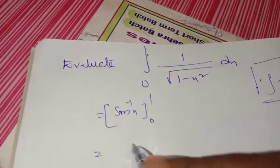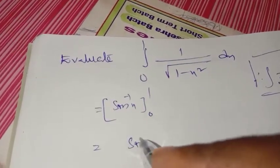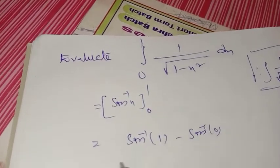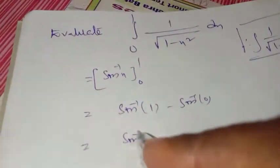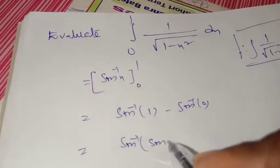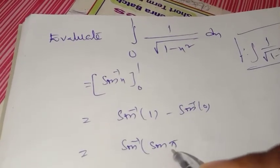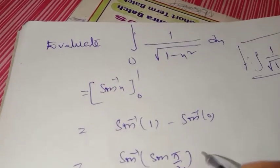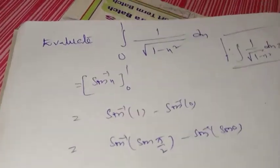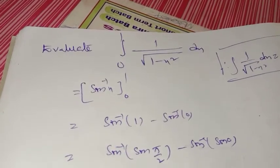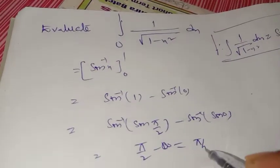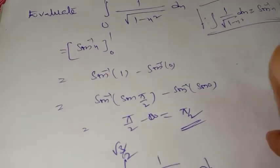That equals sin inverse x with limits 0 to 1. Substituting: sin inverse of 1 minus sin inverse of 0. sin inverse of 1 is 90 degrees, that is π/2. sin inverse of 0 is 0. So the answer is π/2 minus 0 equal to π/2.